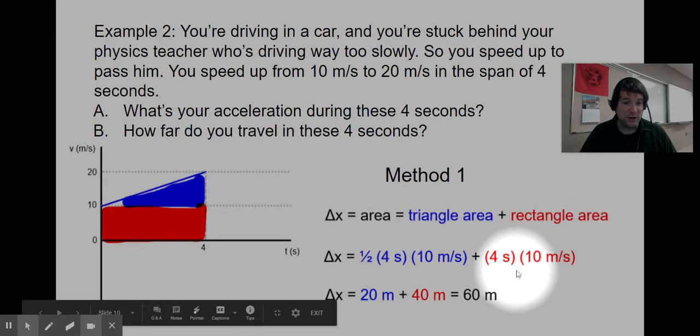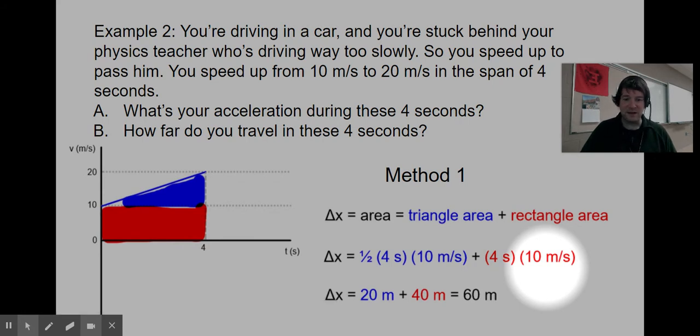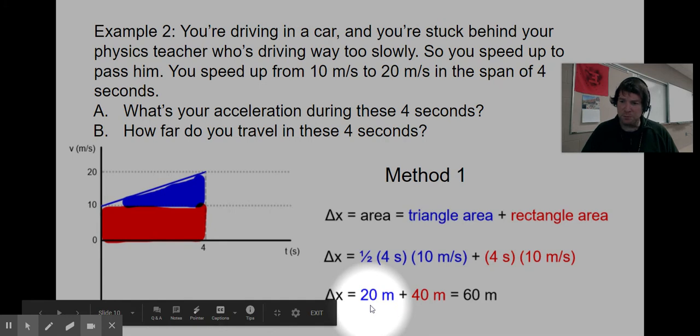Plus the red rectangle: four seconds times 10 meters per second. For a rectangle, we're just multiplying base times height. Blue area is 20 meters, red area is 40 meters, the total displacement is 60 meters.